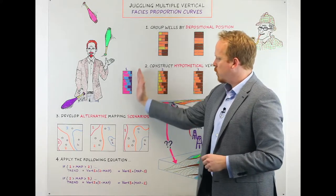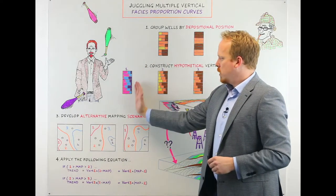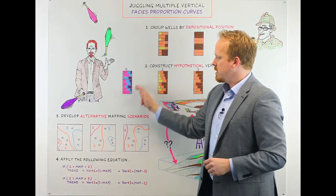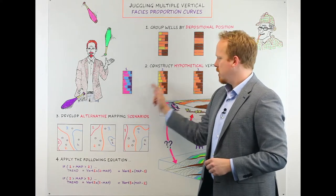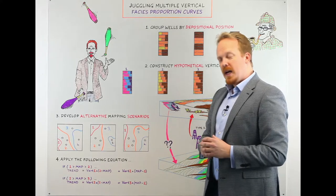But in doing so you can blend these curves together so that if you're 30% of the way between one and two on this map, the vertical curve that you'll get will have 70% of this facies assemblage and 30% of that facies assemblage with those same vertical patterns.